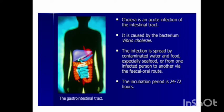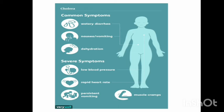Another bacterial disease is cholera. Cholera is basically an infection of the intestinal tract caused by a bacterium called Vibrio cholerae. This infection is also spread by contaminated water and food. Symptoms are watery diarrhea, nausea, vomiting, dehydration, and very low blood pressure. So typhoid and cholera are the bacterial diseases — typhoid caused by Salmonella typhi and cholera caused by Vibrio cholerae.